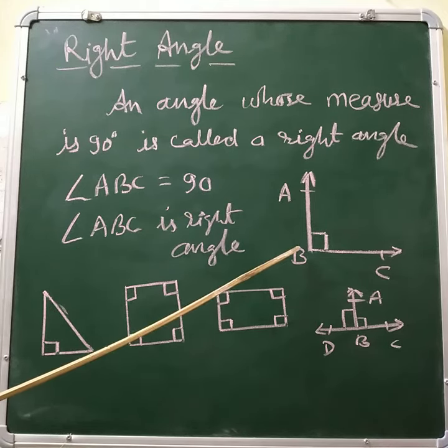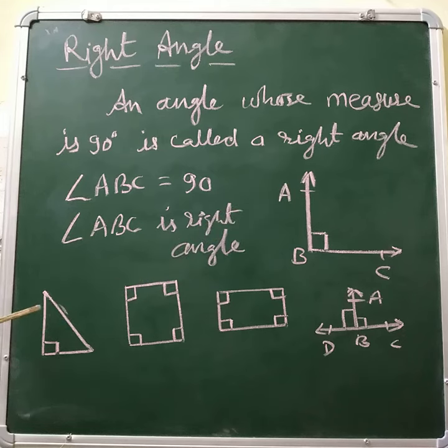Hence, angle ABC is a right angle. In this triangle, this angle shows 90 degrees, so this angle is a right angle.